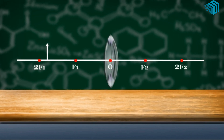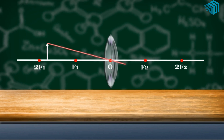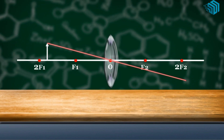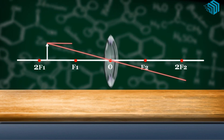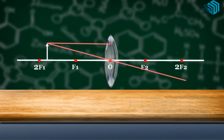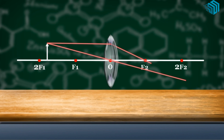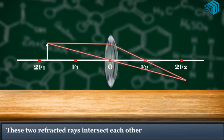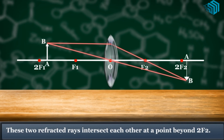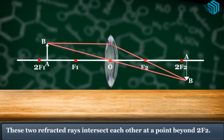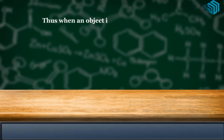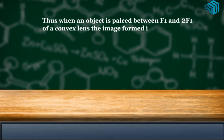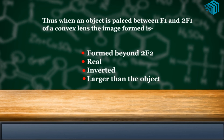When the object is placed between 2F1 and F1: a ray passes through the optical center without any deviation, and a ray parallel to the principal axis after refraction passes through F2 on the other side of the lens. The two refracted rays intersect each other at a point beyond 2F2. So, when an object is placed between F1 and 2F1 of a convex lens, the image formed is beyond 2F2 — real, inverted, and larger than the object.